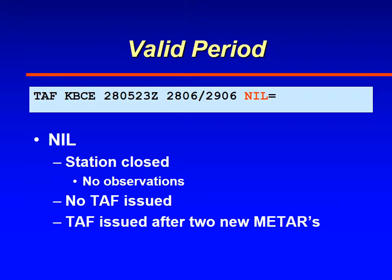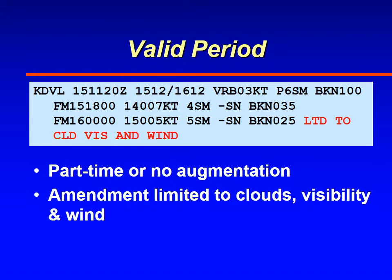To make a TAF you need two consecutive METARs. At airports that have either part-time or no augmentation, especially if they're AO1 stations, there's no precipitation reported at those locations. As a result, they will only issue amendments for clouds, visibility, and wind, but not for the different types of weather or precipitation.